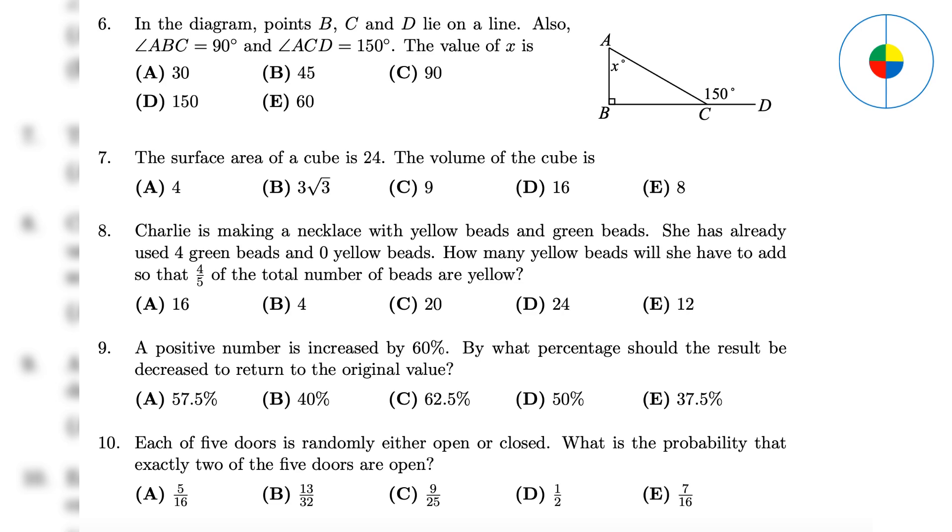Question 9: Assume the number is 100, increased by 60 percent, it becomes 160. To return 160 to 100, you use 60 divided by 160, which is 37.5 percent.